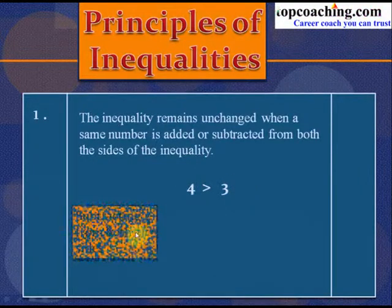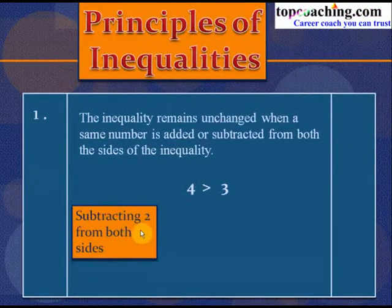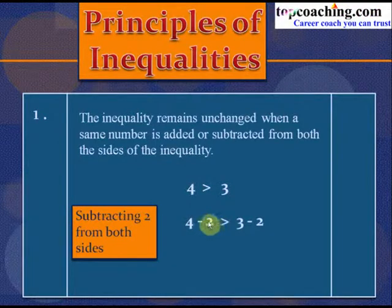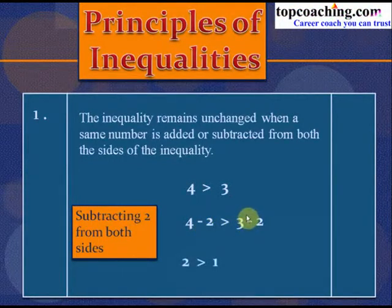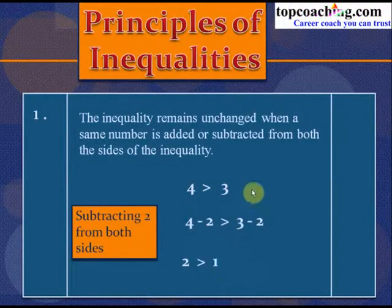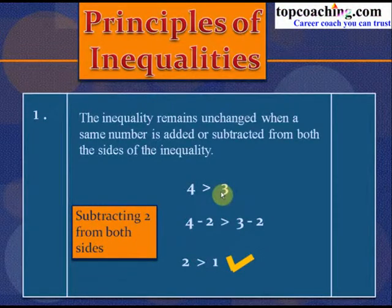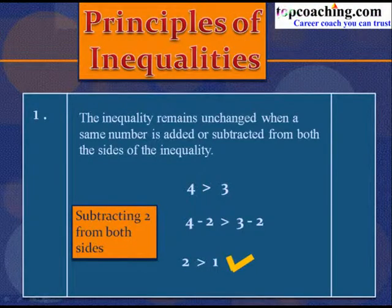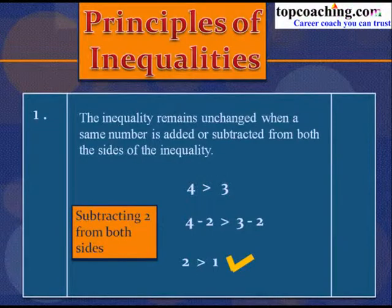Similarly, subtracting 2 from both sides: 4 − 2 = 2 and 3 − 2 = 1, giving 2 > 1, which is also true. The inequality remains unchanged when the same number is subtracted from both sides. So the inequality remains unchanged when the same number is added or subtracted from both sides.